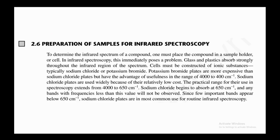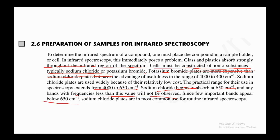For infrared spectroscopy, one must place the compound in a sample holder or cell. This immediately poses a problem: glass and plastics absorb strongly throughout the infrared region, so cells must be constructed of ionic substances — typically sodium chloride (NaCl) or potassium bromide (KBr). KBr plates are more expensive than NaCl plates but are useful over the full range of 4000 to 400 cm⁻¹. NaCl plates are widely used due to their lower cost; their practical range extends from 4000 to 650 cm⁻¹, since NaCl begins to absorb at 650 cm⁻¹. Since few important bands appear below 650 cm⁻¹, NaCl plates are the most common choice for routine IR spectroscopy.